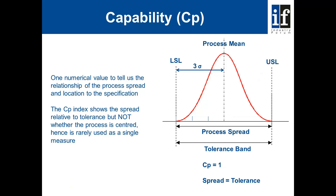When we consider capability, one value tells us the relationship of the process spread and the location to the specification. The CP index shows the spread relative to the tolerance, but not whether the process is centered — hence it's rarely used as a single measure. We can see a normal distribution curve where the distribution curve is equal to the upper and lower specification limits. In this instance, the CP would be one — the spread equals the tolerance.